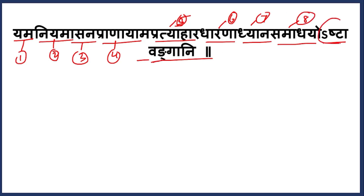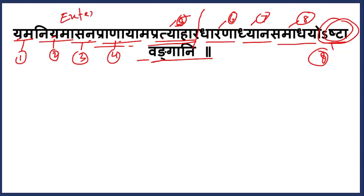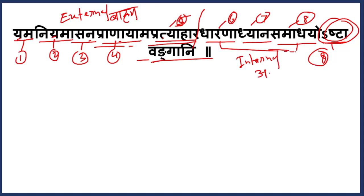Ashta means eight. So how many limbs are there according to Patanjali Yoga Sutra? The answer is eight — Ashtavyangani. In the Yoga Sutra itself, the first five — Yama, Niyama, Asana, Pranayama, and Pratyahara — are known as the external limbs, called Bahiranga. The remaining three — Dharana, Dhyana, and Samadhi — are called the internal limbs, Antaranga. We will talk more about these differences as the sutras come.